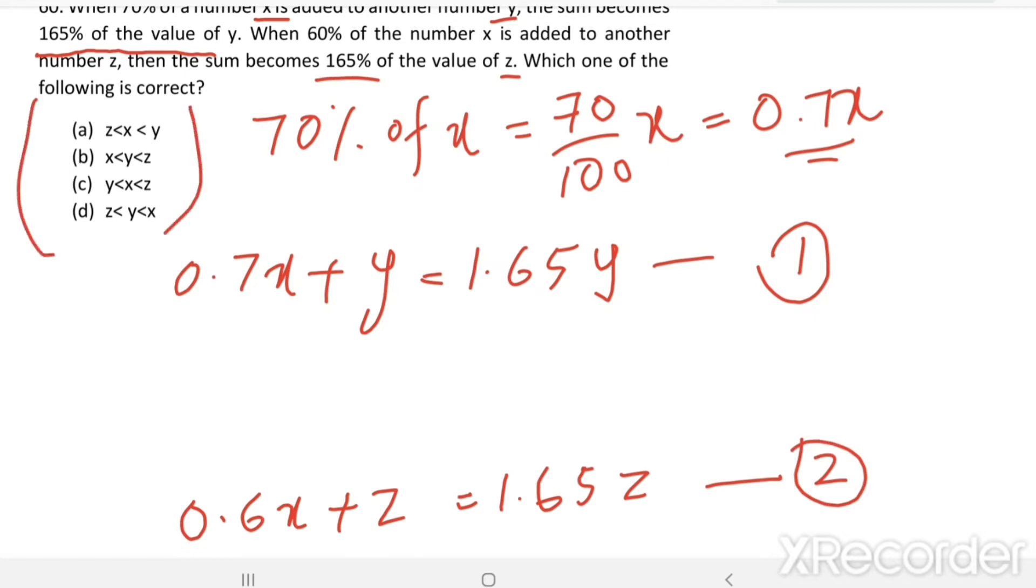Then, which of the following is correct? So from equation 1, 0.7x equals 0.65y. So from here, it is clear that y is greater than x. Or this implies x equals 0.65 divided by 0.7y. Denominator is greater than numerator. That means x is only a fraction of y. Therefore, y is greater than x.